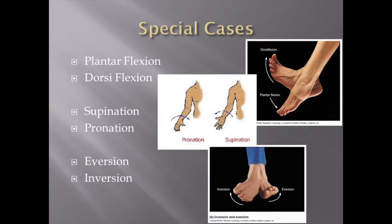For the ankle, there's eversion and inversion. Eversion is turning the ankle outward with dorsiflexion. Inversion is plantar flexing and turning the foot inward. Ankle injuries are much more commonly inversion injuries rather than eversion, because of how the bone structure and ligaments are arranged — you're much stronger on your medial side, and the bones limit your range of eversion.